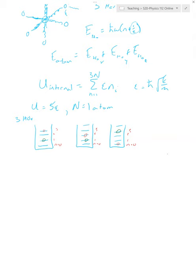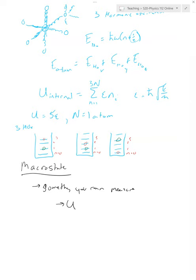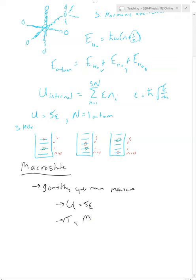To make this useful, we need to talk about microstates and macrostates. A macrostate is the thing that we can measure — something you can measure or care about. In this case, the macrostate is U, the total energy that the solid has. So the solid has U equals five units of energy, five epsilon. You could also measure its temperature, its mass, or the number of particles — these are all measurable things.